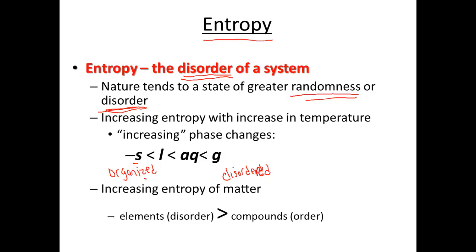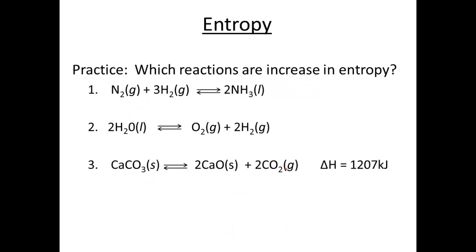So more disordered means more disorder — organization to lack of organization, increasing entropy as we move toward gases. Elements are more disordered than compounds; compounds like NaCl have a regular structure or pattern, so Na plus Cl has more disorder than NaCl. For a practice problem: nitrogen plus hydrogen making ammonia goes from two gases to a liquid, so we have a decrease in entropy because there's more order.